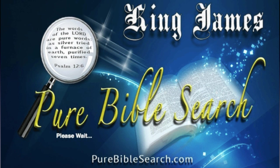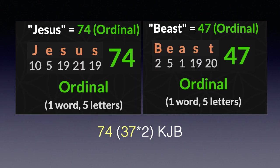We'll also be using the web version of the King James Pure Bible Search software. First, I need to mention two important numbers: number 74, which is the value of the name Jesus using simple English ordinal gematria, and the number 47, which is the value of the word beast.